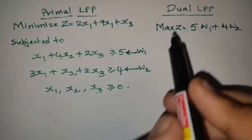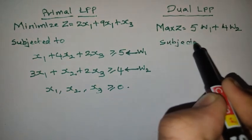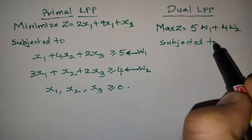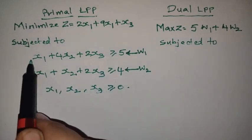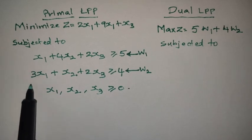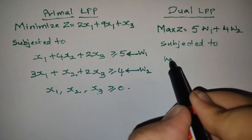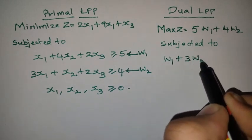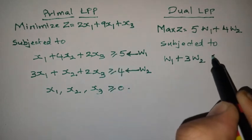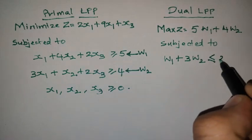Subject to, now we need to write the constraints. First one, here the coefficient is 1 and here the coefficient is 3. So W1 plus 3W2, here greater than becomes less than or equal to. What is the X1 coefficient? 2.